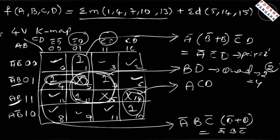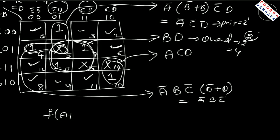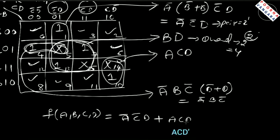So the final minimized expression is: f(A, B, C, D) = A̅C̅D + ACD + A̅BC̅ + BD. This is the final minimized expression for the given Boolean function. Thank you.